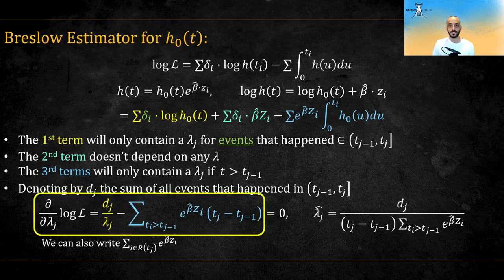The first term is the derivative of the first term in the log likelihood. Since the h0 will be equal to lambda and delta will be equal to 1, the derivative of log of x is 1 over x, and then we take the sum over all the terms that actually had an event in that time frame. In the second term, the exponent stays the same. h0 of u will be equal to lambda j between t j minus 1 and t j, if t i is greater than t j minus 1. So the derivative will be 1 and the integral will be the limits.